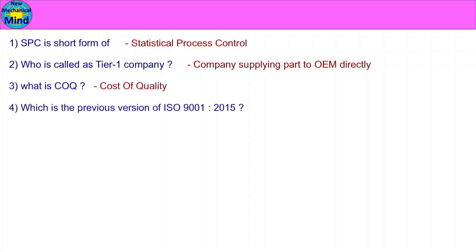Which is the previous version of ISO 9001:2015? The previous version of ISO 9001:2015 is ISO 9001:2008.